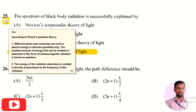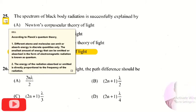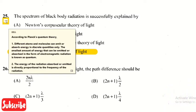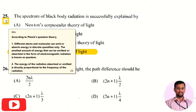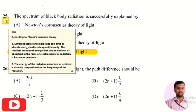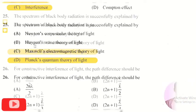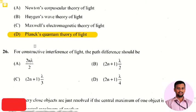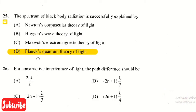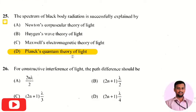Another key point of Planck's quantum theory is that the energy of radiation absorbed or emitted is directly proportional to the frequency of radiation. These are the two different statements of Planck's quantum theory of light.